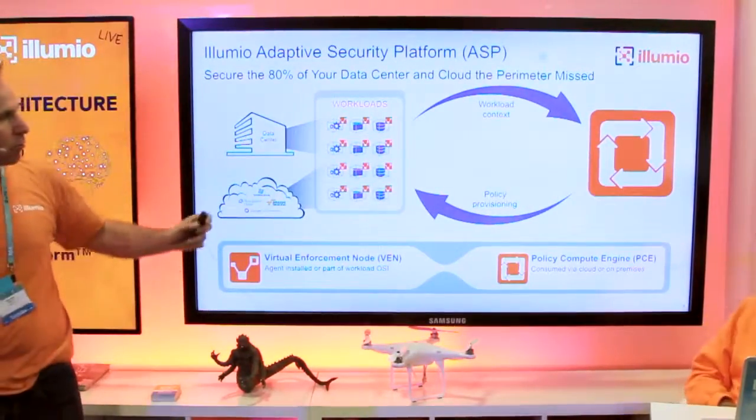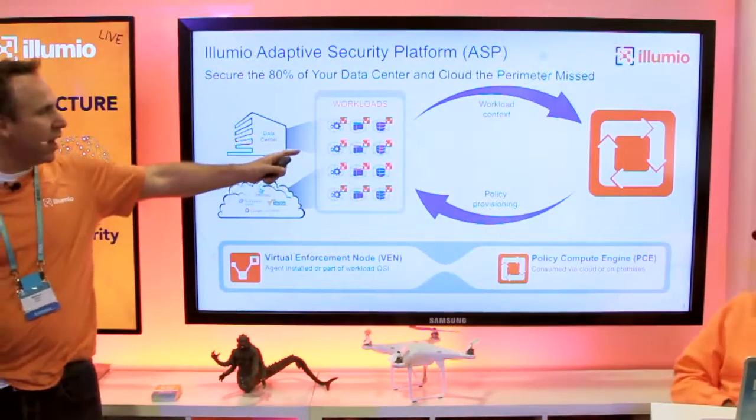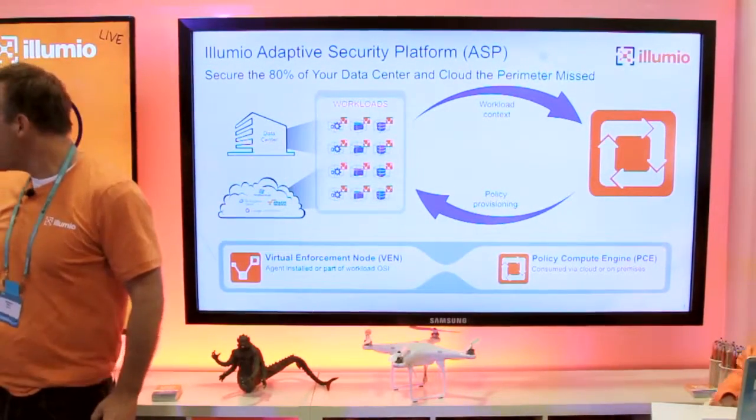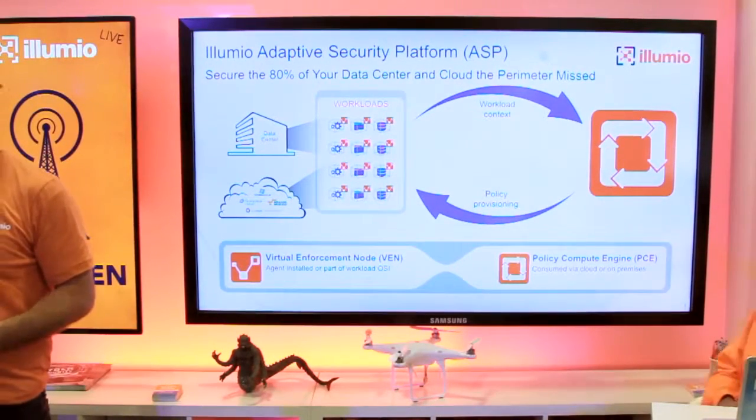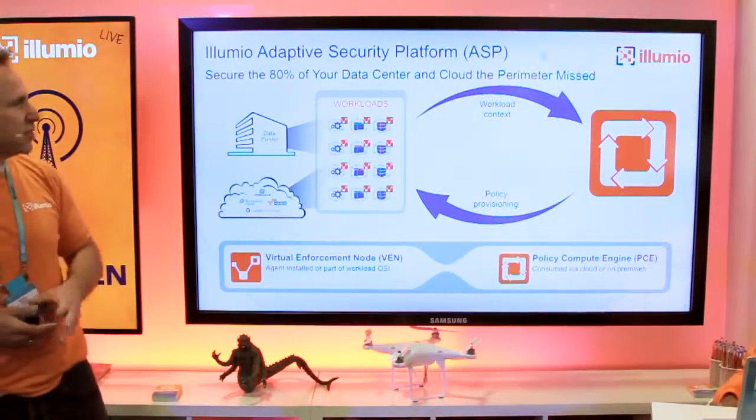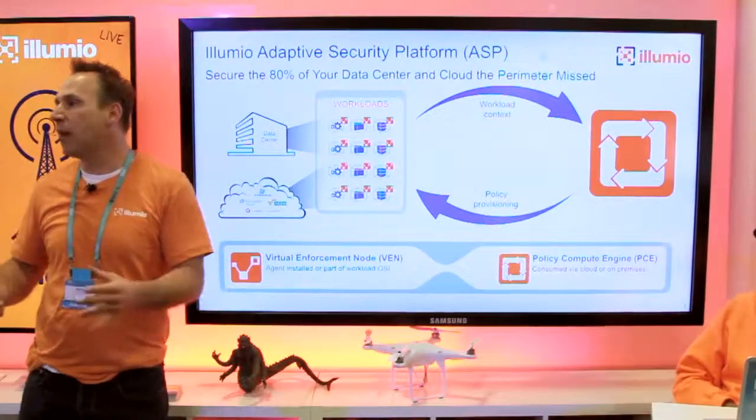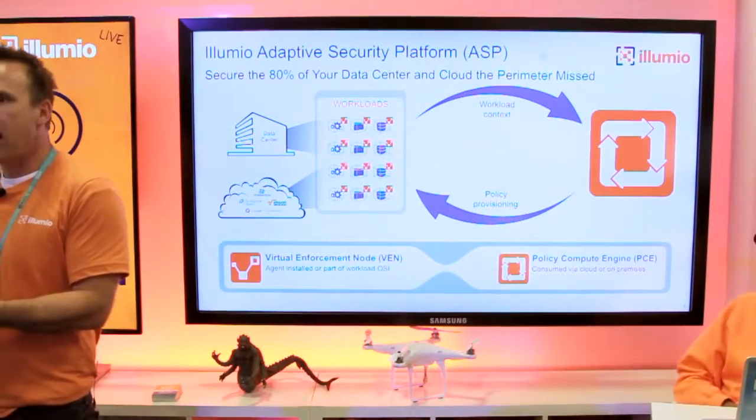And on your right here, or your left, my right, you'll see those orange boxes. Those orange boxes are what we call VENs, or Virtual Enforcement Nodes. They are installed inside of the operating system. So that could be a bare metal server. That could be a VM.